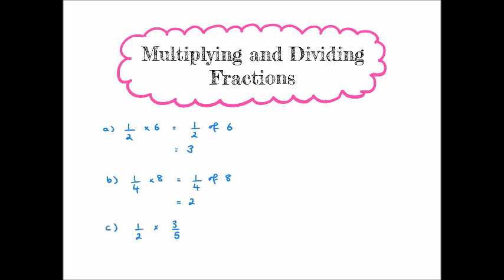For instance, let's say we want to find a half times three-fifths. One technique is to think about this in terms of a diagram. We know it's the same as finding a half of three-fifths. To represent three-fifths we find a shape, split it into five equally sized pieces, and shade three of these. Then to find a half of this we split the shape exactly down the middle and shade one half.